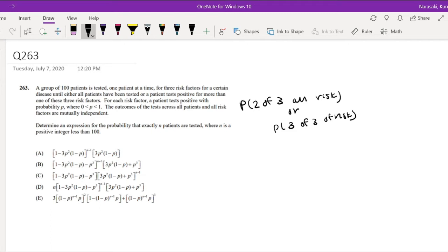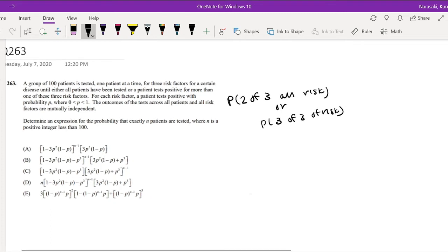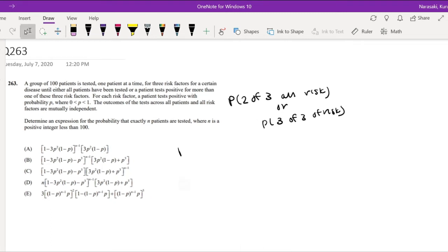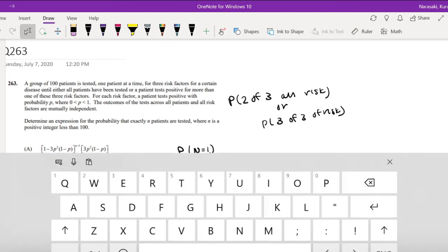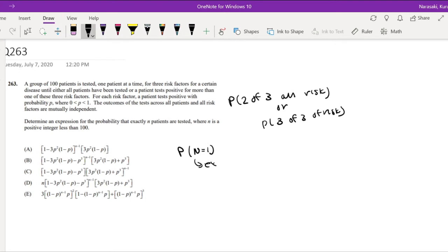Alrighty, that's kind of a mouthful, but let's just take it one by one. So what would it be for when N is equal to 1? This means exactly 1 patient is tested. What's the probability that exactly 1 patient is tested? Well, that means they go until all patients have been tested or a patient tests positive for either 2 out of the 3 risks or 3 out of the 3 risks. What's the probability that they have exactly 2 out of the 3 risks? Well, that's equal to exactly 2 risks.